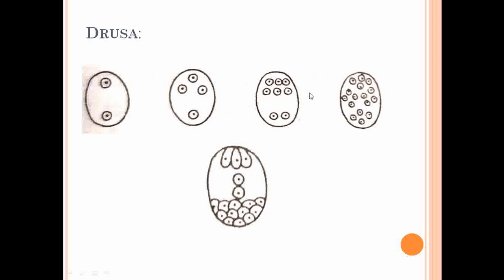This 8-nucleate stage undergoes nuclear division to form the 16-nucleate stage. After the 16-nucleate stage, there are no further divisions. Three nuclei migrate to the micropylar end and function as the egg apparatus, two migrate to the center as the secondary nucleus, and all remaining cells function as antipodal cells.